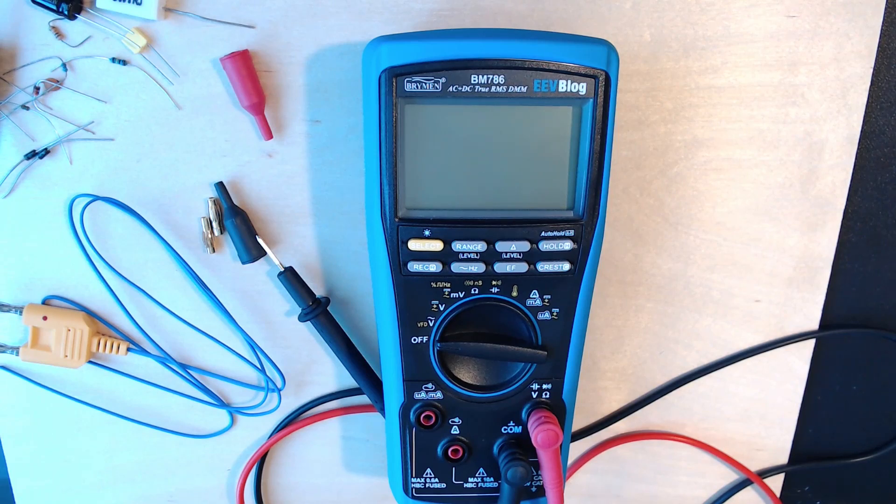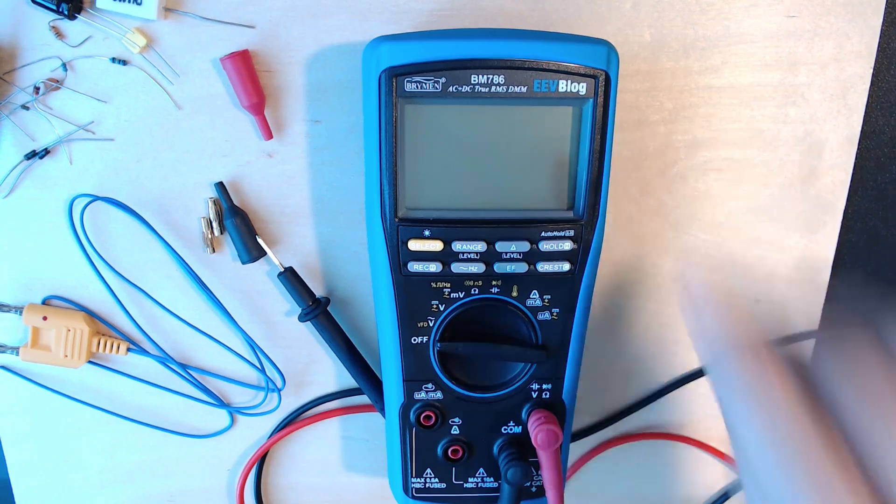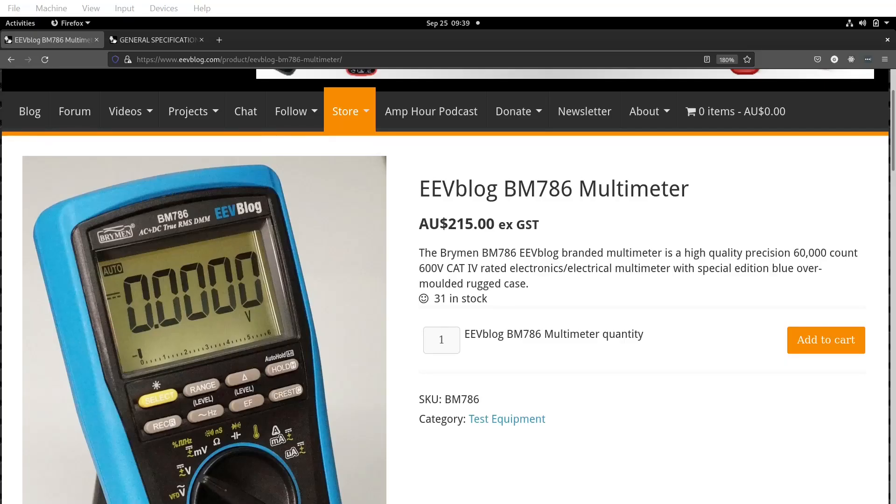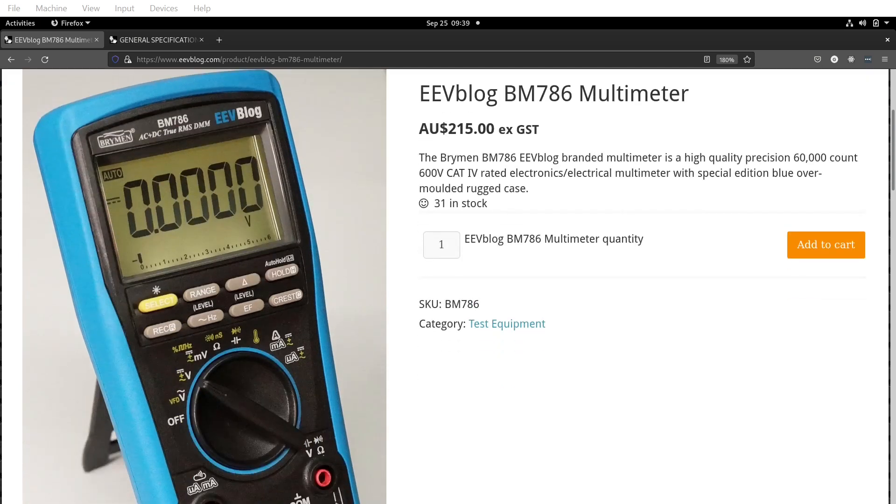Hi everyone, in this video I will be reviewing the BM786 true RMS digital multimeter from Brymen. It's EEVblog branded and I bought it from the EEVblog store for 215 Australian dollars quite recently. That list price excludes the tax and shipping as well, so in my case it cost me 246 Australian dollars with shipping and tax.